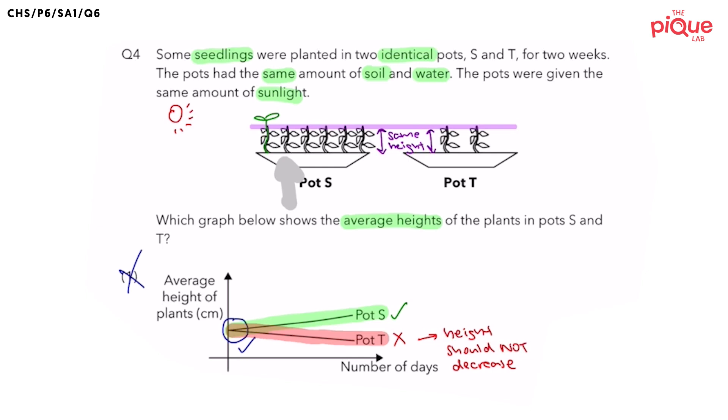It would receive less sunlight, right? And as a result, it would have to grow even taller so that it can absorb more sunlight. And this would happen for all of the plants in pot S.